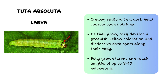Upon hatching, the larvae emerge and begin feeding on the host plant, initiating their destructive life cycle. The larvae of Tuta absoluta are small caterpillars with a pale yellowish-green body and distinct dark spots along their back. They have a segmented body with three pairs of true legs near the head and several pairs of prolegs along the abdomen. The larvae are highly destructive, feeding voraciously by burrowing into the leaves, stems, and fruits, and the larval stage typically lasts 10 to 15 days.